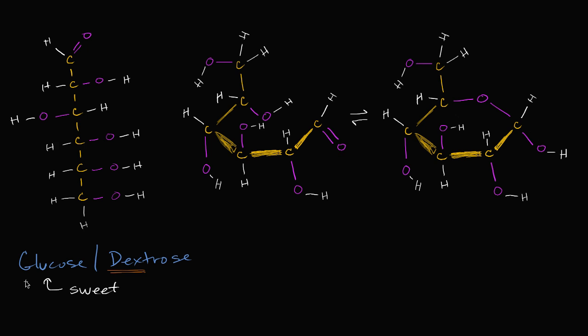Glucose is super important because it is how energy is stored and transferred in biological systems. When someone talks about your blood sugar, they're talking about the glucose content. The whole process of photosynthesis is about plants harnessing the sun's energy and storing it in the form of glucose. Cellular respiration is all about taking glucose and using it to create ATP, which is the molecular currency of energy inside our body. We can also make chains of glucose to form glycogen and starches.